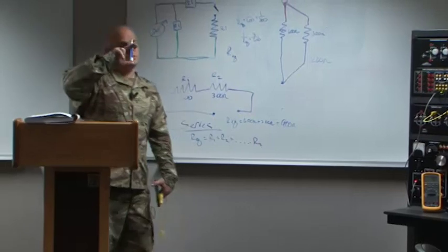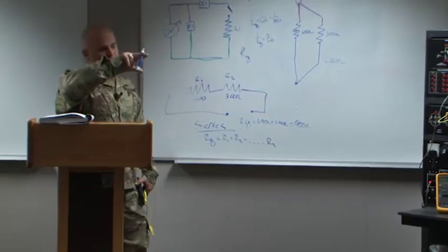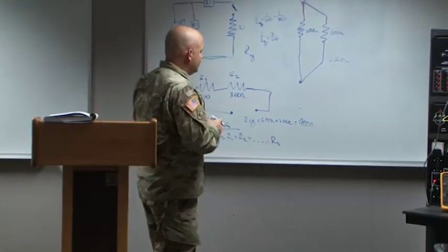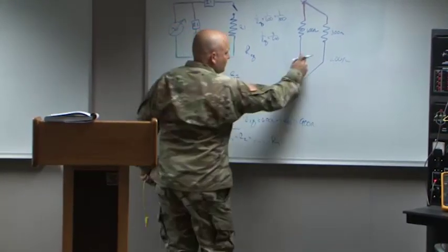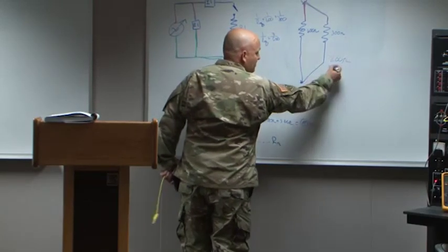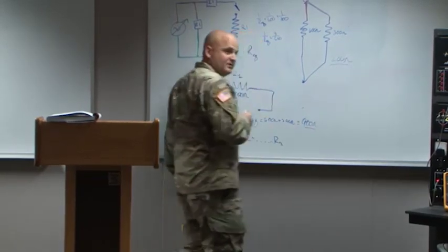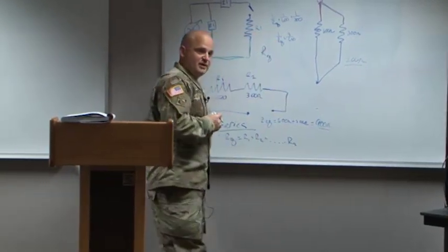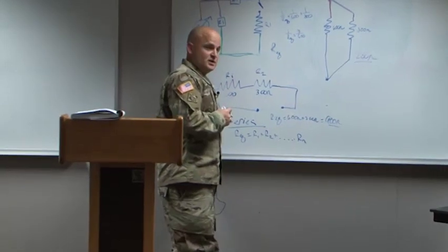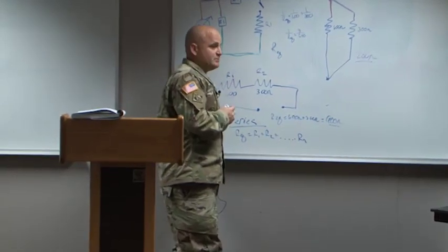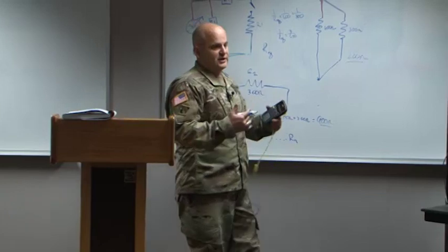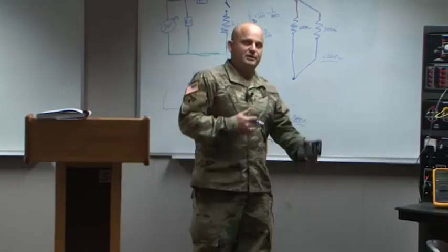The easiest method on your calculator: enter the first resistor value, hit the 1/x inverse button, plus the next resistor, hit 1/x, continue for all resistors, hit equals, then hit 1/x one final time. For 600 and 300: 600 inverse, plus 300 inverse, equals, then inverse — gives 200 ohms. The pattern is: inverse, inverse, inverse your result.